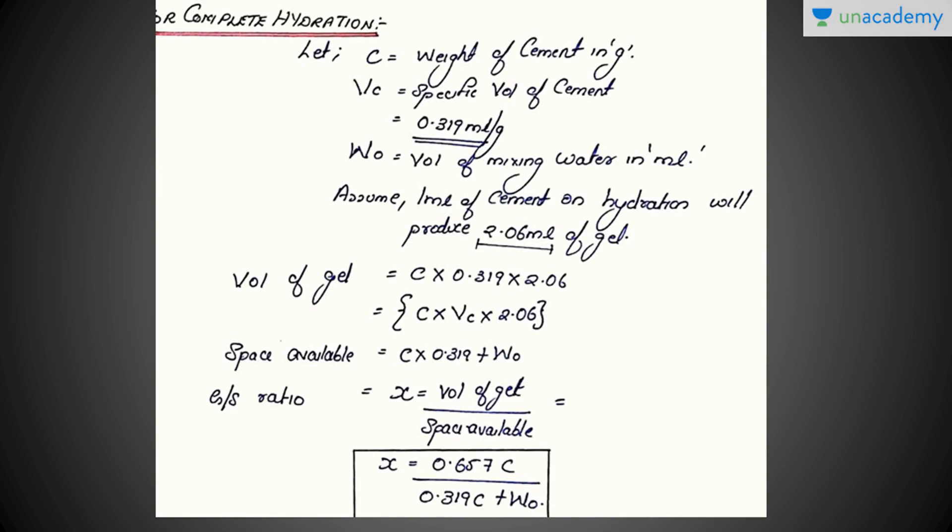Now let's move on to the calculation part. Today we are going to see the calculation for the gel space ratio itself. We must consider that for hydration purposes, cement can be fully hydrated or partially hydrated. Gel space ratio considers both these cases — full hydration as well as partial hydration. First, let's see the case of complete hydration. This involves a small derivation.